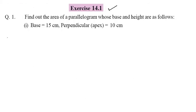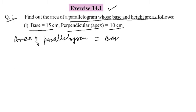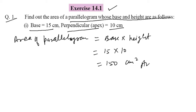Come to Exercise 14.1, Question 1, part one. Find the area of parallelogram whose base is fifteen centimetre and perpendicular, that means height, is ten centimetre. Area of parallelogram is equal to base into height — fifteen into ten — that is one hundred fifty square centimetre. That is your answer.